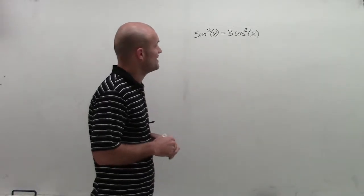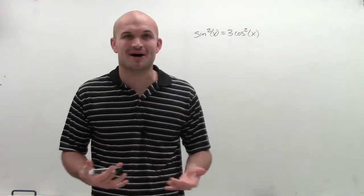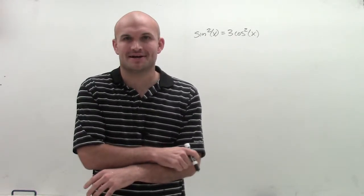Welcome. So what I have is sine squared of the square root of x equals 3 cosine squared of the square root of x. And we need to find the values that are going to make this trigonometric function true.